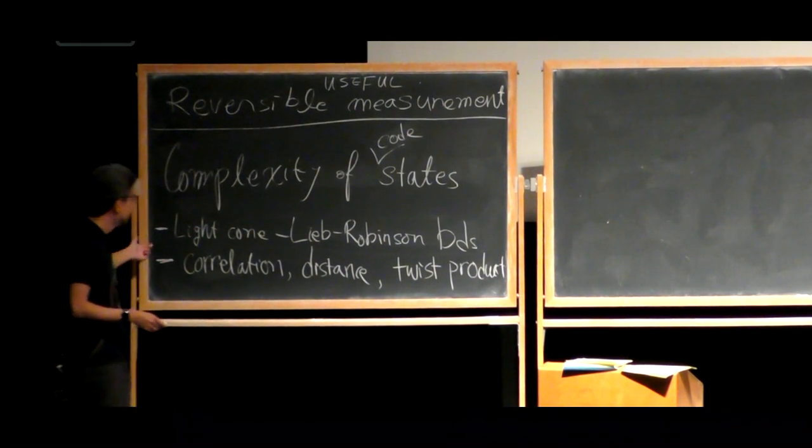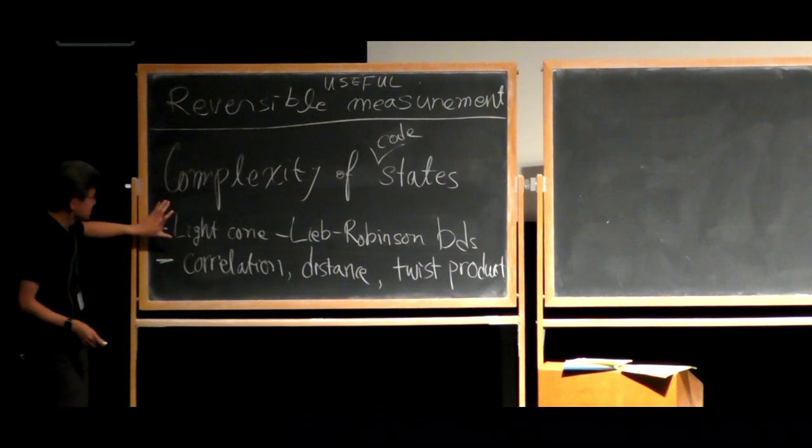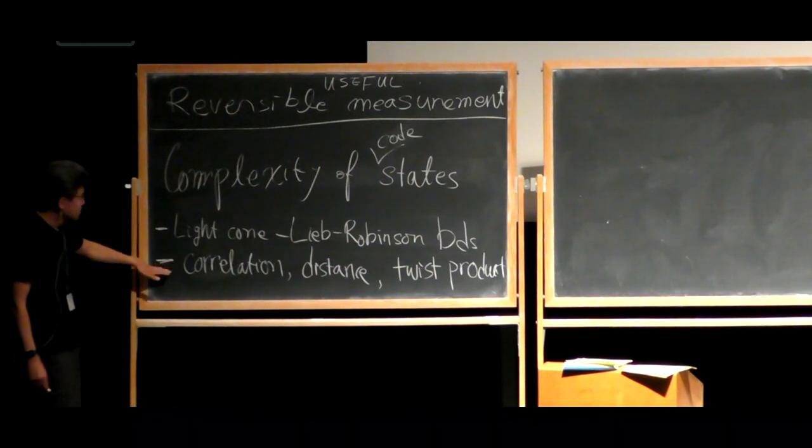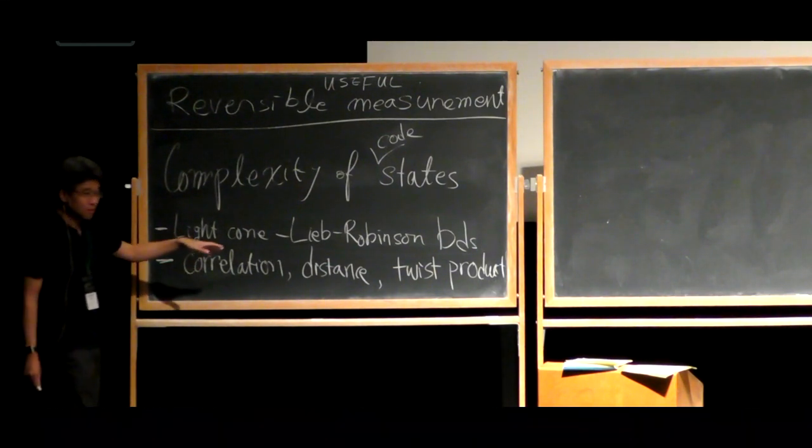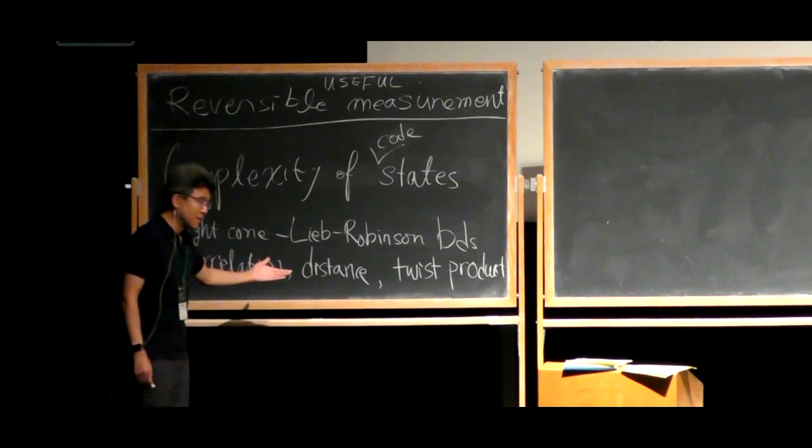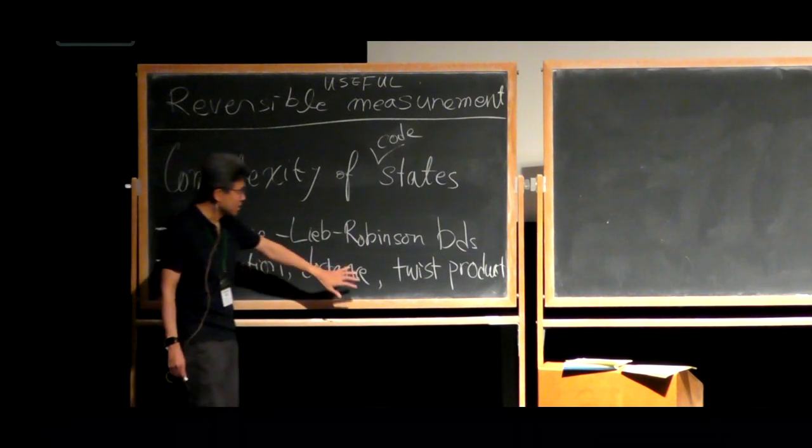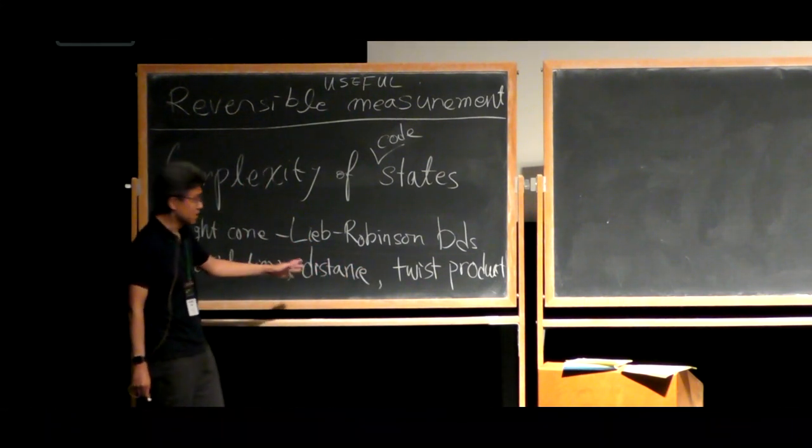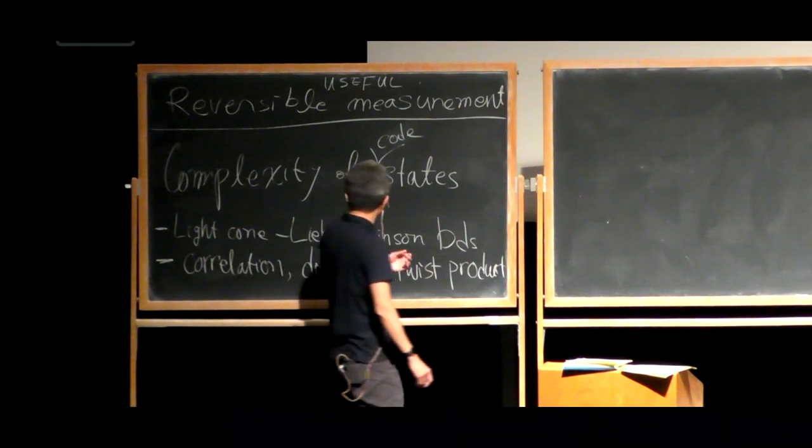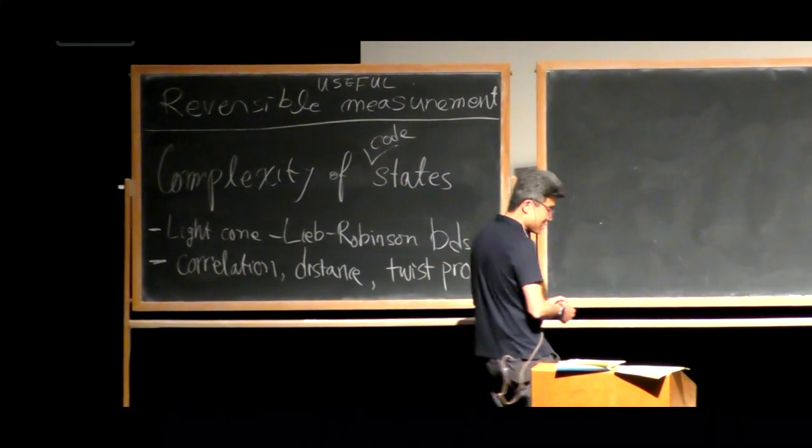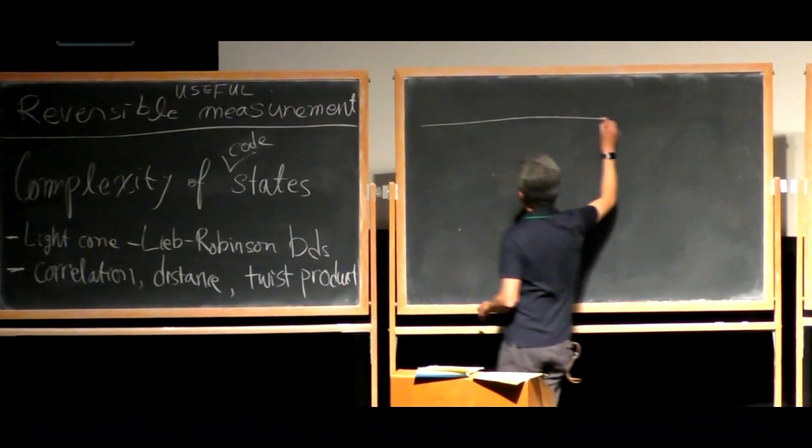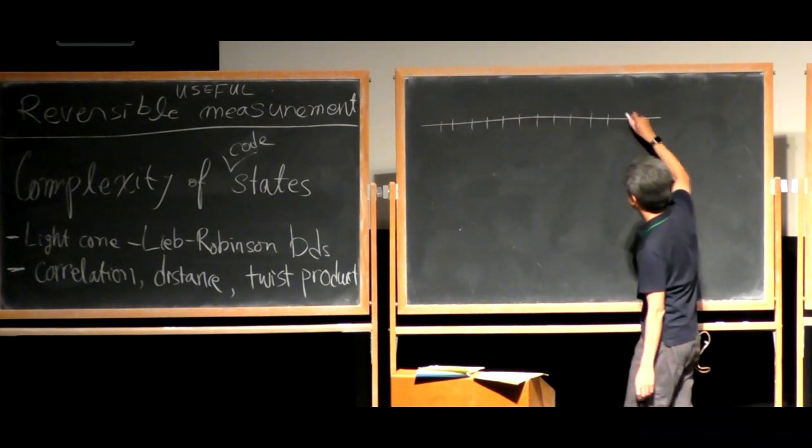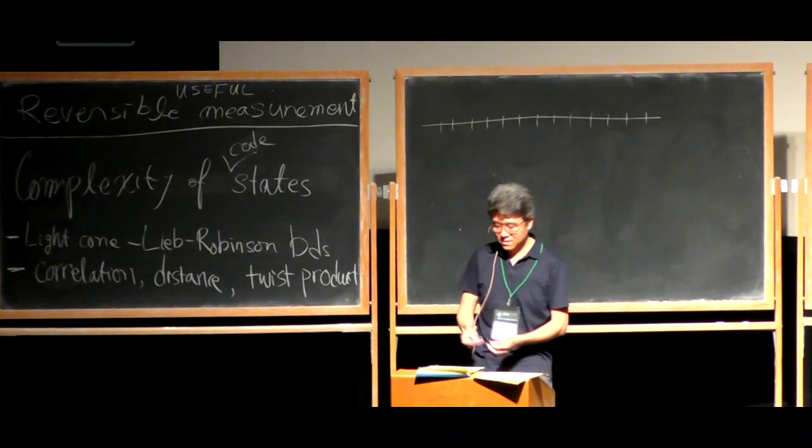To that end, I'm going to talk about the basic light cone and the corresponding Lee-Robinson bounds, then I will apply those to the correlation function and code distance. And for the last 20 minutes or so, I want to introduce a new technique where the previous argument just fails, but this one succeeds to show the hardness. Okay, let's start with the light cone. I'm pretty sure you already know, but for the sake of completeness of these lectures, let me just mention that.